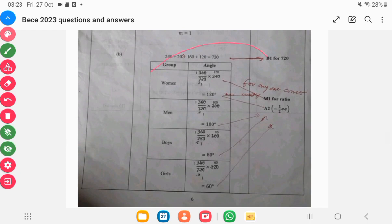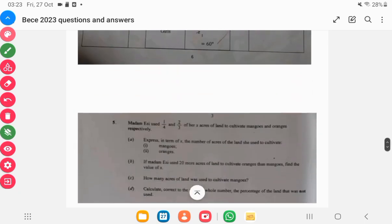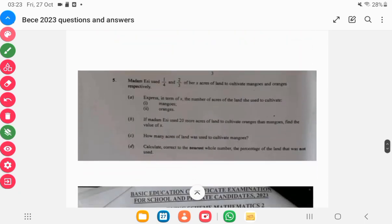So your pie chart here—you have to work out for the angles. And what I will say is when you are drawing a pie chart, always ensure you are using 5 centimeters for the radius of the pie chart when drawing it, so it could be visible.